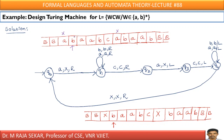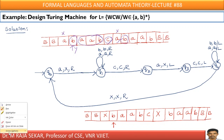As we were discussing, this B must be replaced by Y. After replacing B by Y, I must move further right until I reach C. In between Y and C, if I get A or B, I must replace A by A and B by B — I must keep them as they are until I reach C. C must be replaced by C. Even if I come across capital X, I must replace capital X by capital X and keep moving right. Once if I come across B, that B must be replaced by Y, and I must come back.